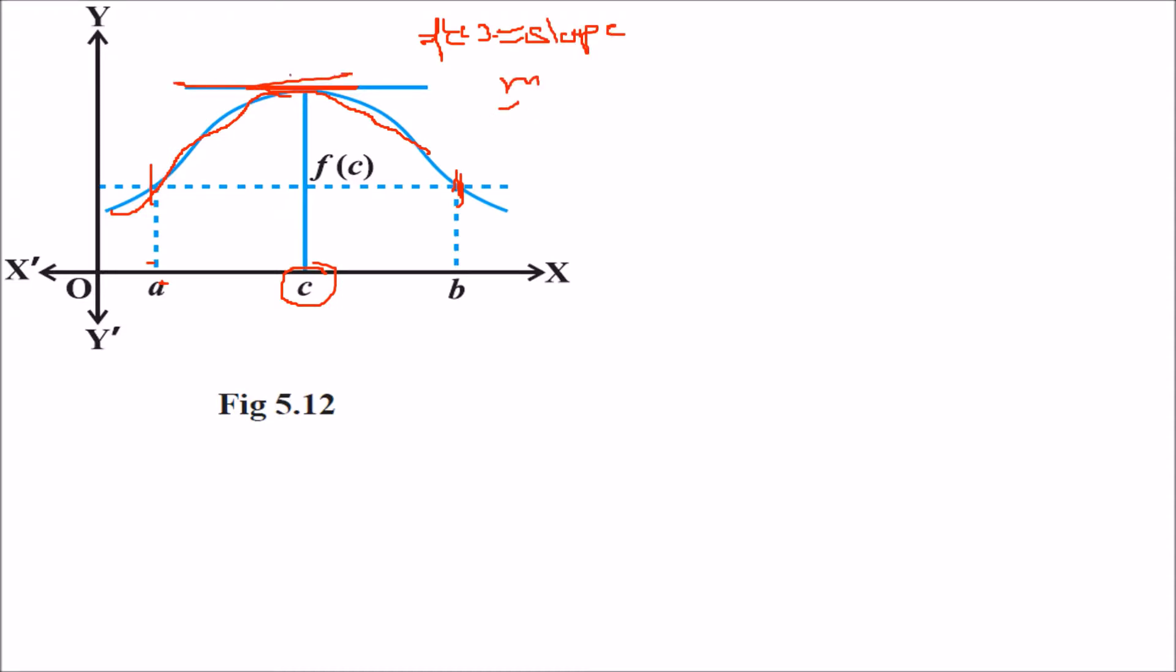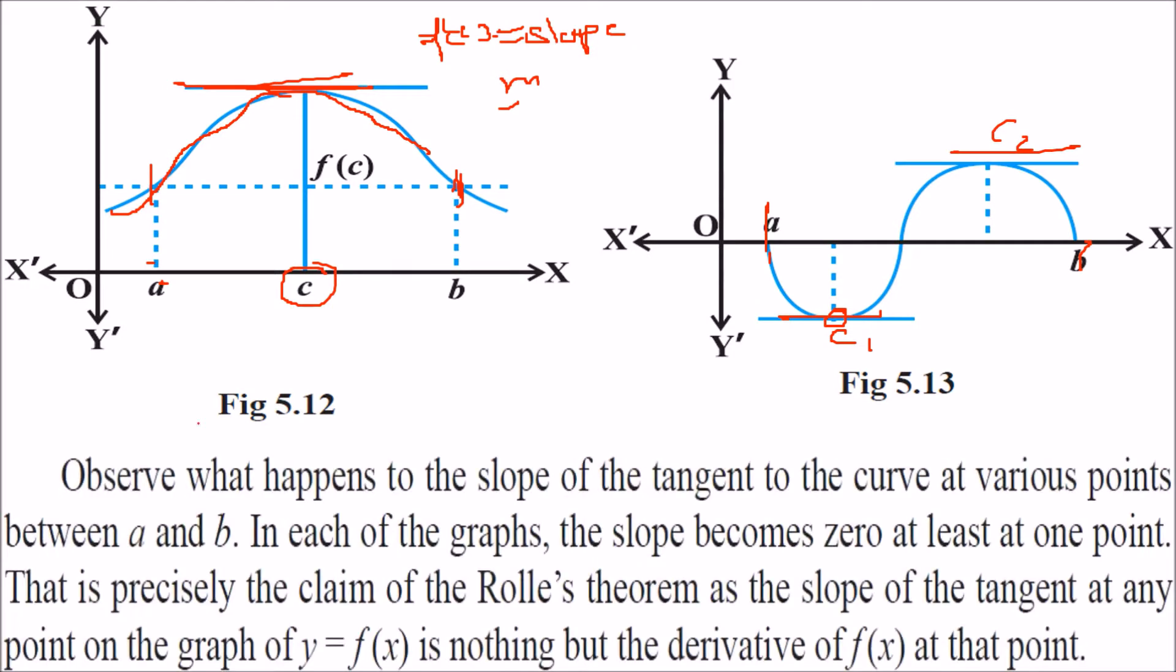The gradient, the tan theta is 0 here. If you take this function, see, there are two c's, c1, c2. At this point also m is 0. At this point also m is 0. That is, the slope is 0. Just observe that what happens to the slope of the tangent to the curve at various points in a and b. At some point it reaches 0.